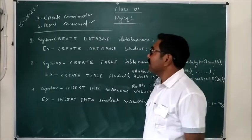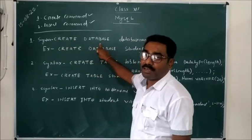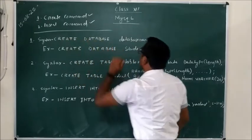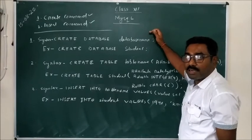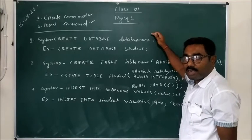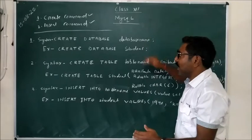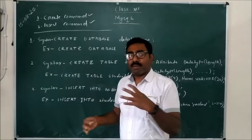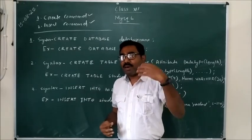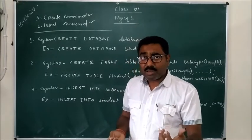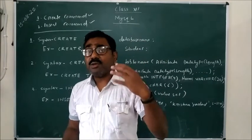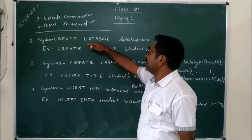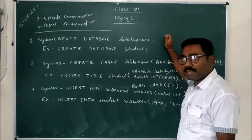Commands are case insensitive, so you can use small or capital letters. But a smart practice is to use keywords in capital letters. CREATE and DATABASE are keywords, so write them in capitals. User-defined names or identifiers can be written in lowercase. This makes it easy to identify keywords versus identifiers when maintaining or correcting your code later.